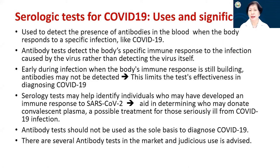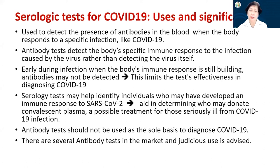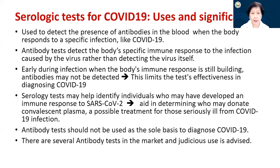In some communities, people cannot differentiate between a positive test for the virus and a positive test for the antibodies. Early during infection, when the body's immune response is still building up, antibodies may not be detected — and this limits the test's effectiveness in diagnosing COVID-19. IgM would start to be detected around day five to day seven, and IgG will be detected later, from 14 days onward.